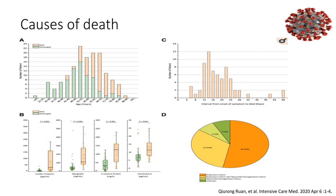Deaths were associated with higher levels of interleukin-6, C-reactive protein, myoglobin, and cardiac troponin. Graph C examined the interval from symptom onset to death, which was mainly between 12 and 20 days.